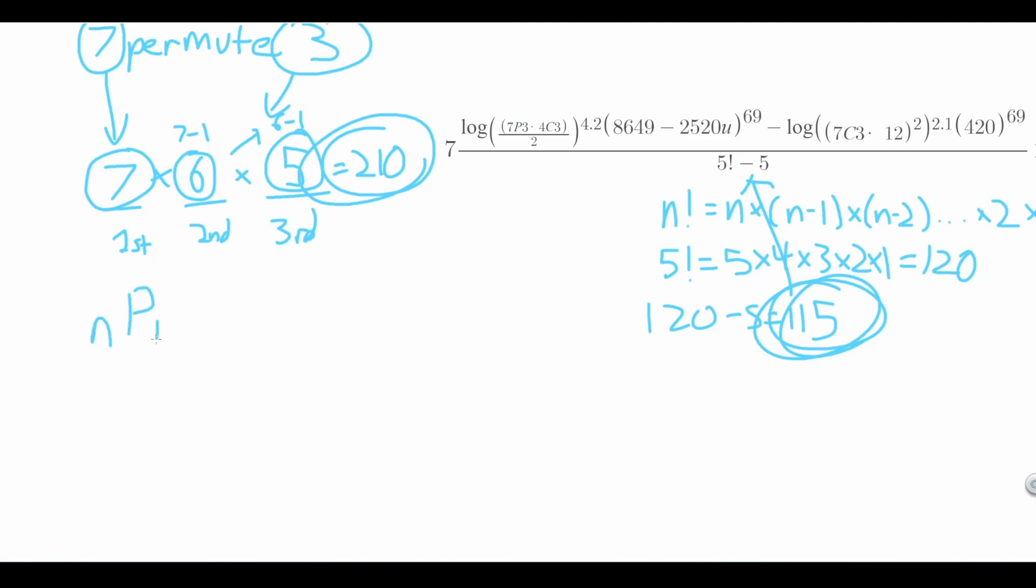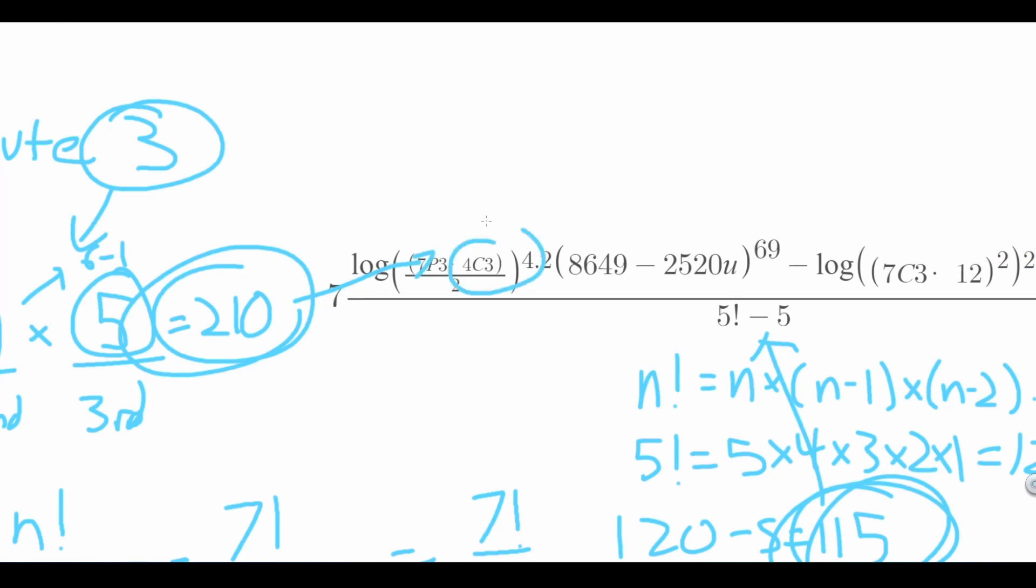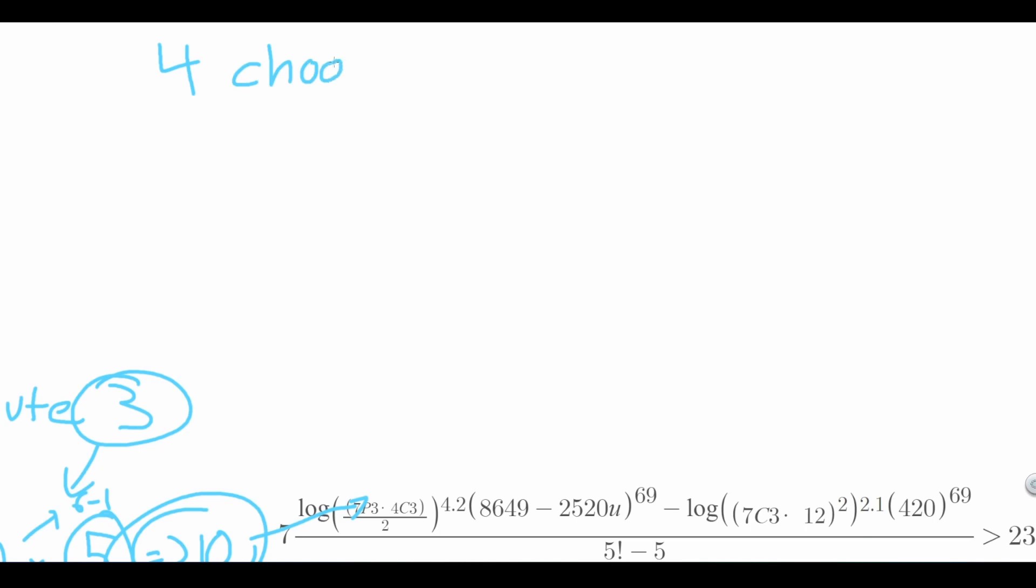Which also is the equation for permutations, which is this and also gives us the same answer. Next, we move on to this. Wait, what the hell is this? 4C3! 4 choose 3 can be thought of as this.